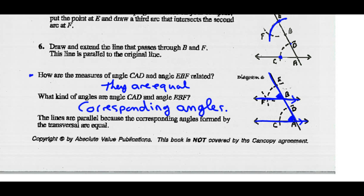The lines are parallel because the corresponding angles formed by the transversal are equal. If you measure these two angles and they are equal — here's our transversal — because those two angles are equal, they're corresponding angles, so these two lines must be parallel.